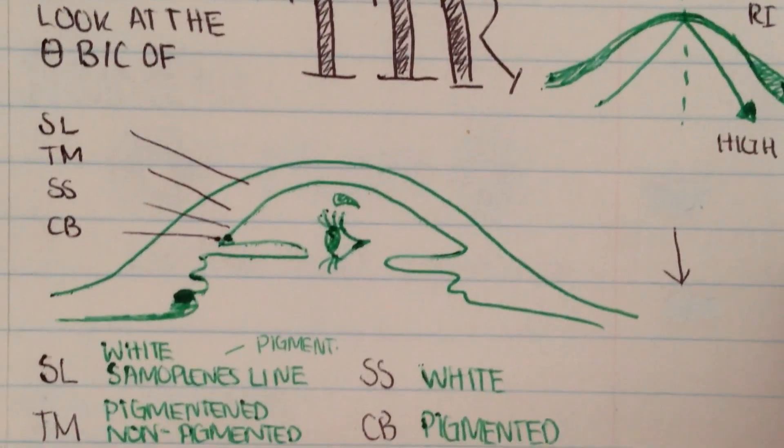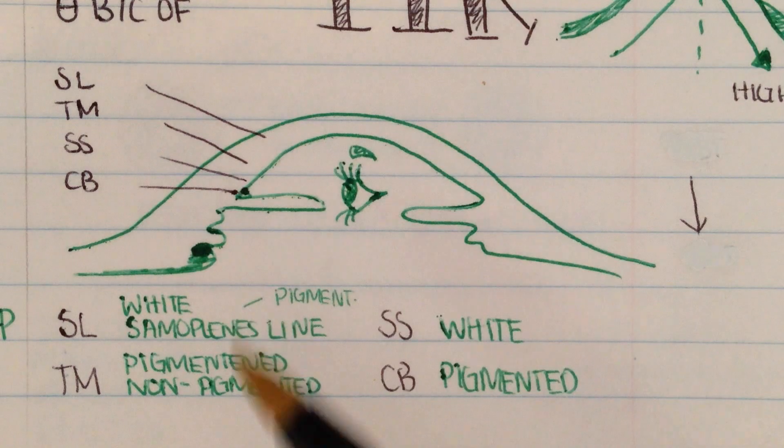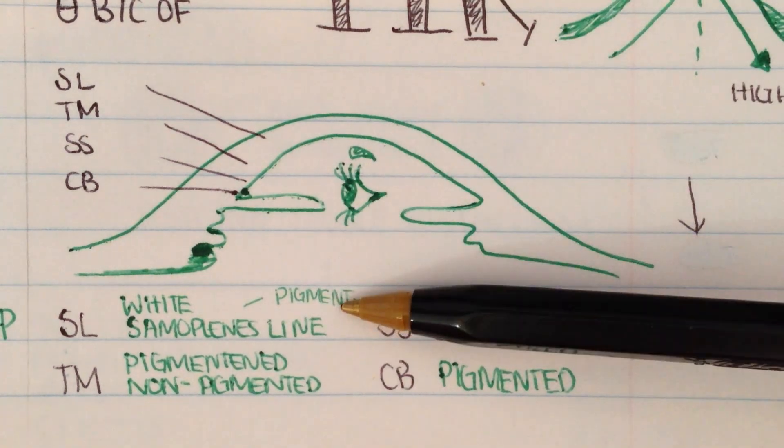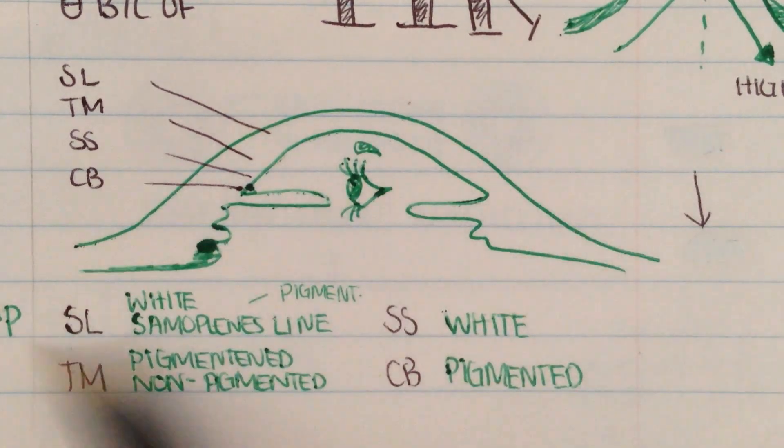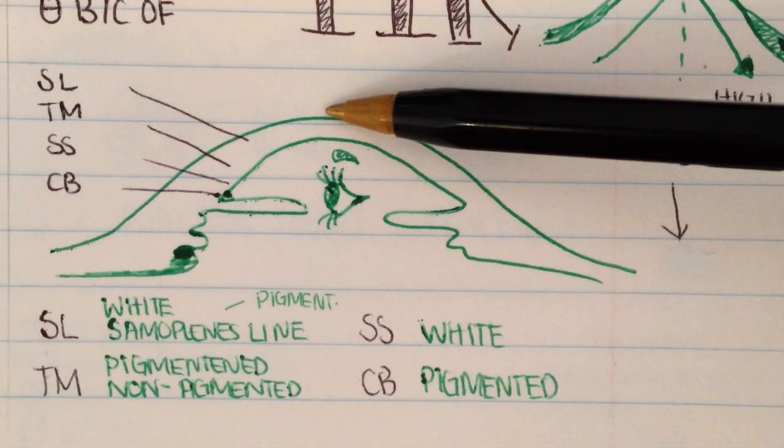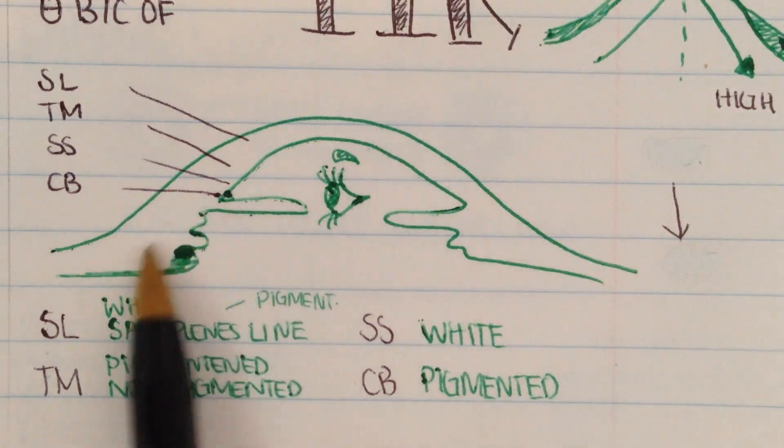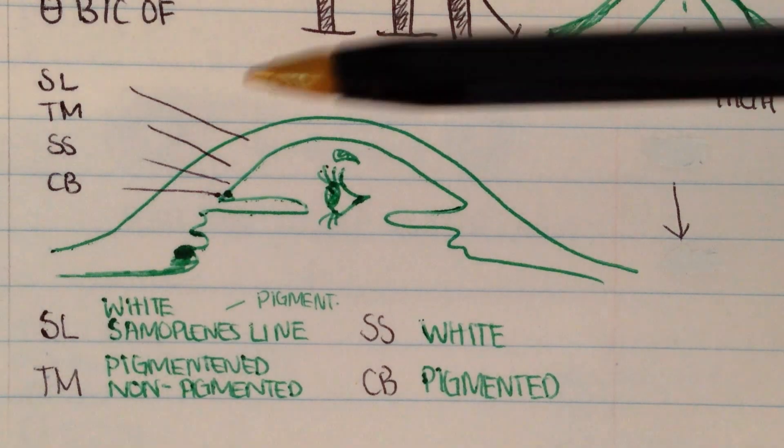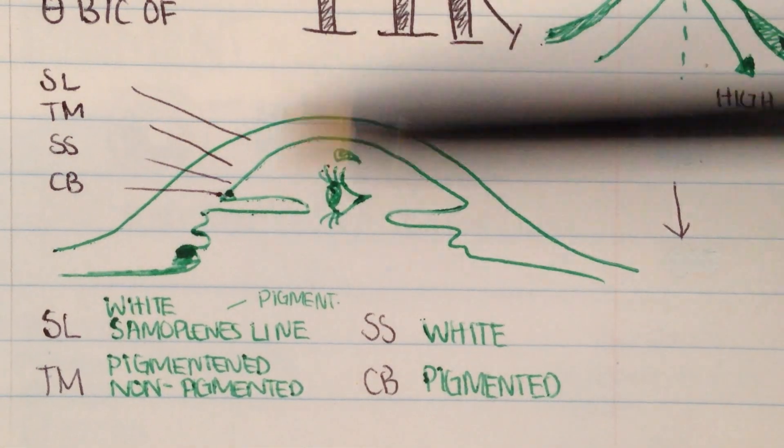When we're looking at the structures, what we're looking out for is a number of structures which we'll discuss. So this image over here is essentially a cross-section of the anterior segment of the eye. You can see the cornea most anteriorly. Here we've got the iris, and then we've got the ciliary body.